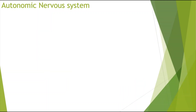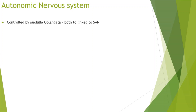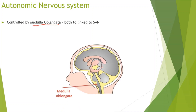So the autonomic nervous system. The autonomic nervous system is controlled by the medulla oblongata, which is located in the brain. The autonomic nervous system is linked to the SAN, the sinoatrial node.